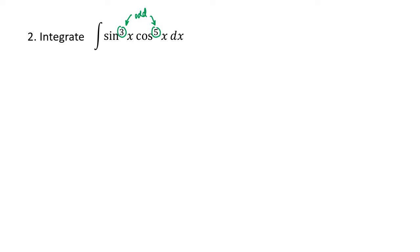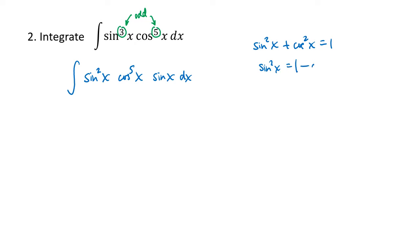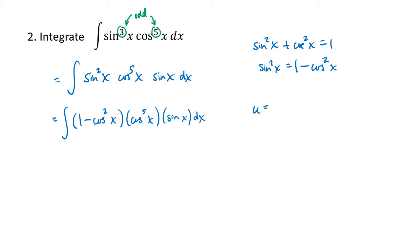So I'm going to split off one copy of sine and rewrite this as sine squared of x times cosine to the fifth of x times sine of x. Then I'll use the identity sine squared of x plus cosine squared of x equals one to rewrite sine squared of x as one minus cosine squared of x. So now I get one minus cosine squared of x, cosine to the fifth of x, times sine of x dx. When I substitute u equals cosine of x, everything in my expression is in terms of cosine except for that one sine at the end, which will make this substitution happen. I am missing a negative sine, but I can handle that by putting in a factor of negative one out front.